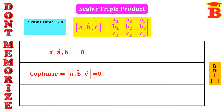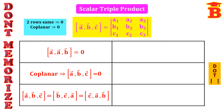Next result: for coplanar vectors, the box product of ABC is equal to 0. We know that coplanar means the determinant is 0, so since the determinant is 0, this box product also equals 0. The box product can also be taken in cyclic order: box of ABC equals box of BCA equals box of CAB — remember the cyclic order.